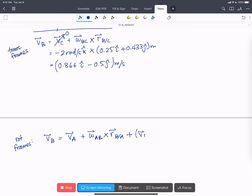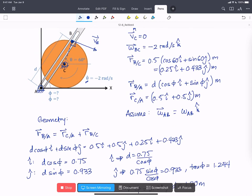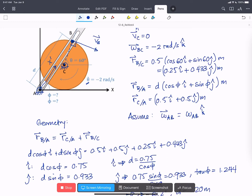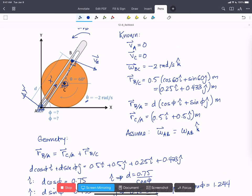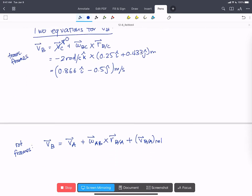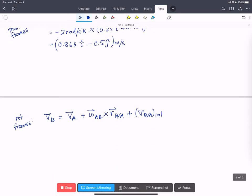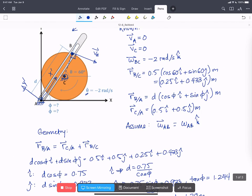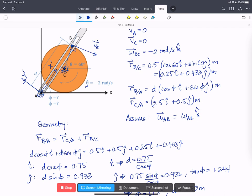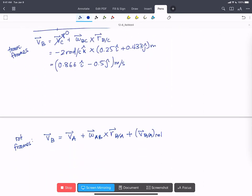So we'll write that VB equals VA plus omega AB cross RB with respect to A plus our extra rotating frames velocity VB with respect to A relative. Now we need to have a rotating frame on our body. I'm going to place the frame so that X prime is along our rocker and Y prime is perpendicular. That means that VB with respect to A relative is only in the I prime direction.